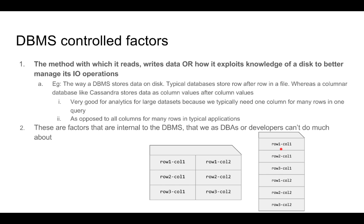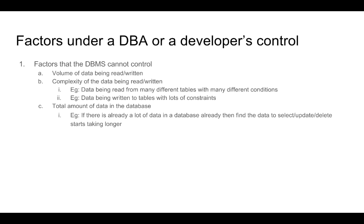These are factors that are internal to a DBMS and these are factors that we as DBAs or developers can't do much about. There are some factors that are under our control, and these relate to the data that we are storing in the database and the queries that we are making. For example, we can control the volume of data that we read or write, the complexity of the data, and the total amount of data that exists in the database. These are technically under our control, though they may ultimately be driven by users — for example, a high traffic application will generate a lot of data. But from a DBMS software point of view, these are factors that are under the DBA's control.